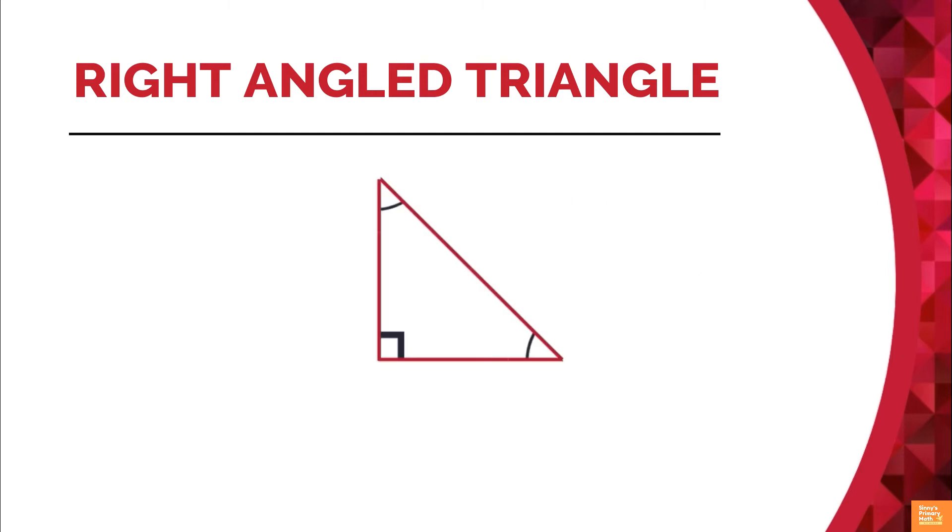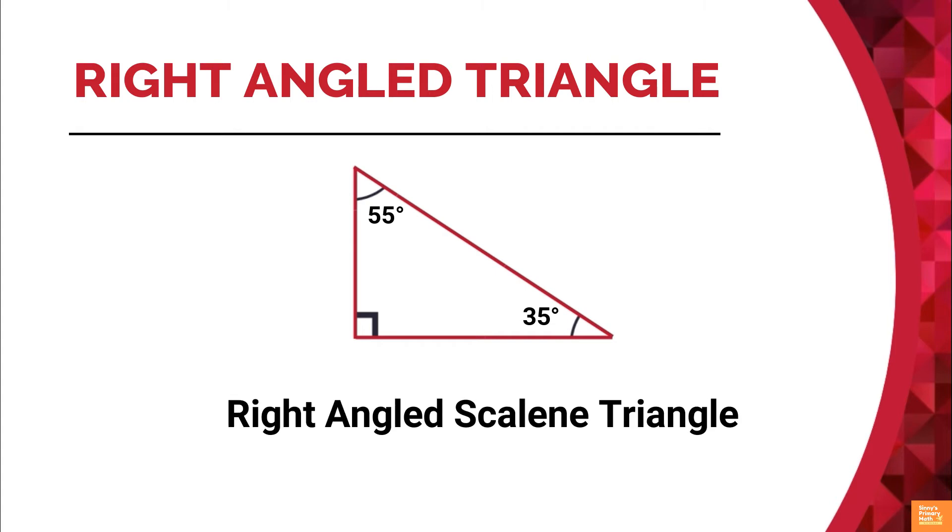A right triangle can be isosceles if its two acute angles both measure 45 degrees. In this case, we can say right angle isosceles triangle. If the two angles have different measures, the triangle will be scalene, that is right angle scalene triangle.